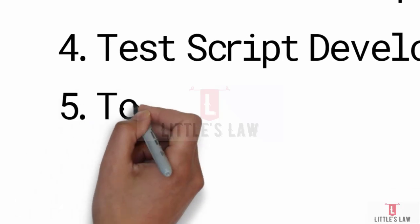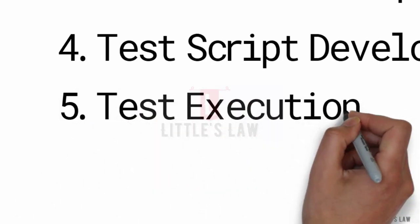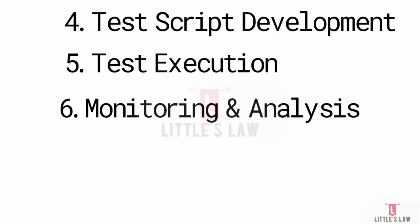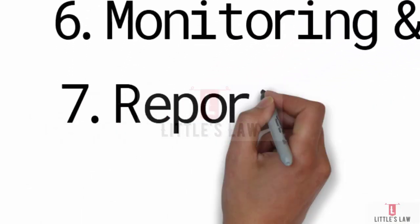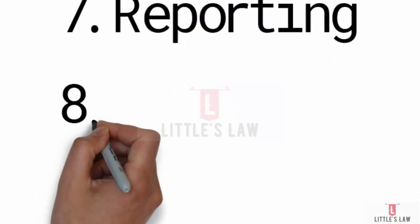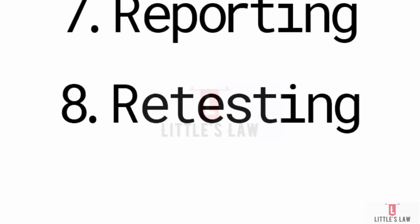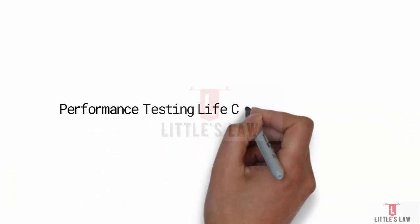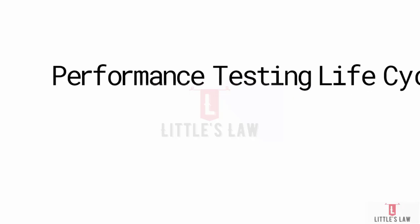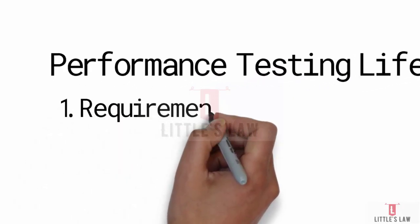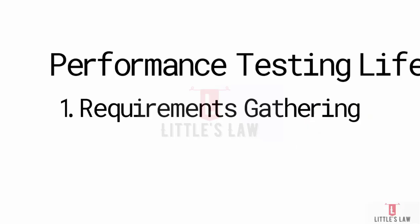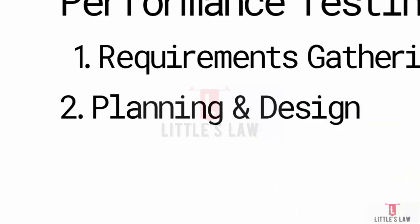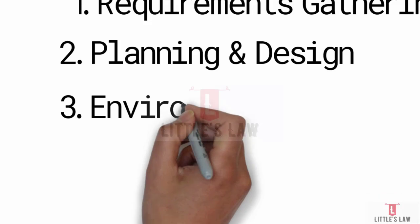If retesting is required, the eighth phase is retesting and verification. Here you verify improvements and ensure issues are resolved. You apply the performance tuning and optimizations based on the analysis, then rerun the performance tests to ensure the changes had the desired effect and no new issues were introduced. In the verification step, you confirm that the performance goals and SLAs are now being met. The outcome is a validated performance improvement.